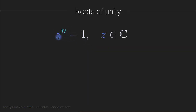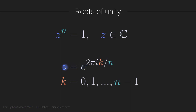The roots of unity essentially just means that for some number z, which is a complex-valued number, if you raise it to the nth power, then it equals one. Now if you set n to be zero, then this is a trivial equation because any number to the power of zero is equal to one. But if n is a larger number, let's say if n is five, then it's not so obvious what z should be in order to get z to the nth power to equal one.